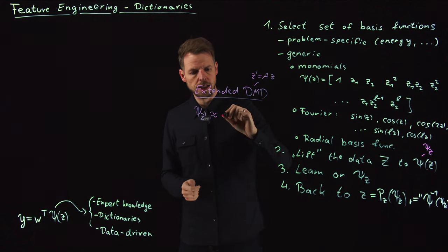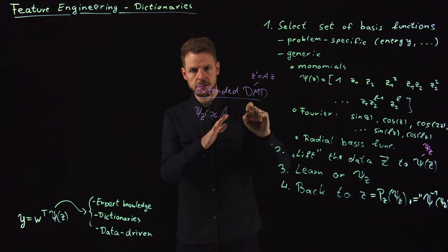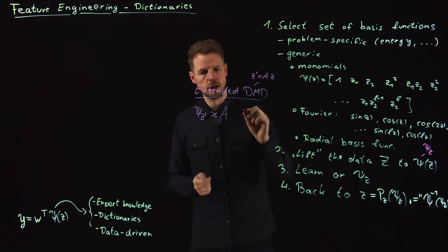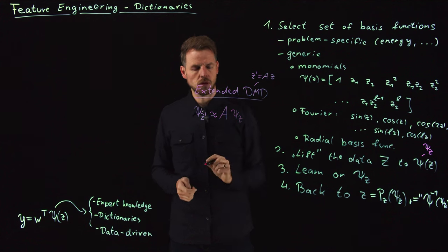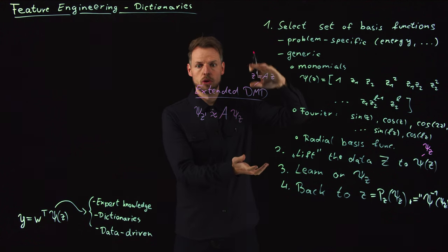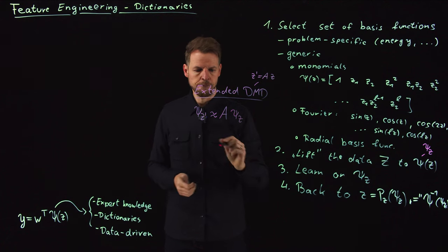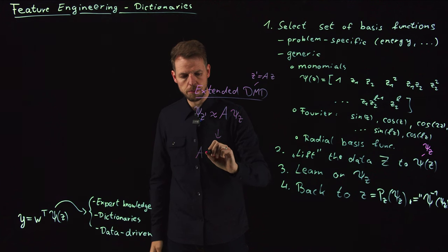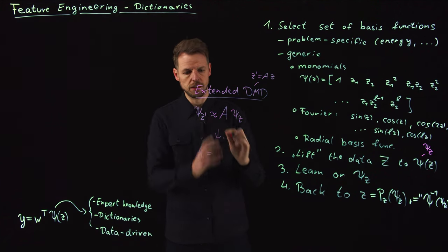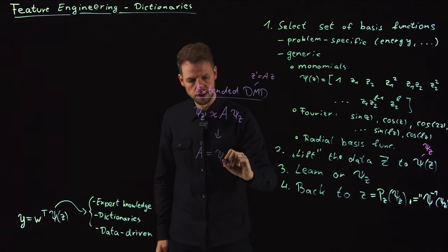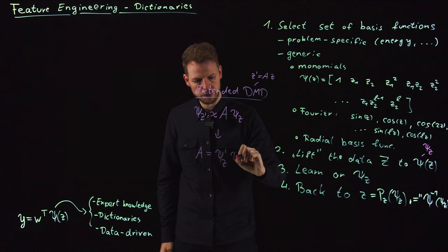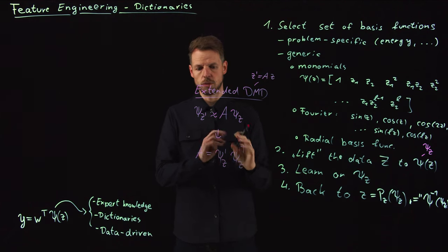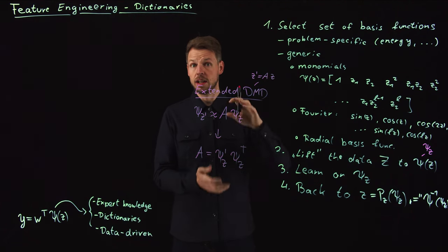And so what the EDMD does here is the same thing except only on the lifted data. So you define a dictionary and then you say, okay, let's assume that there exists this linear mapping, which obviously there does not exist a linear mapping if we have nonlinear dynamics, but let's just assume there is one. So that maps my lifted input to my lifted input at the next time step. And so the training is again a regression problem because we can identify this matrix as the best linear fit mapping Psi Z to Psi Z dash.